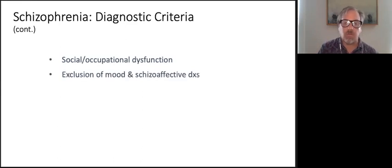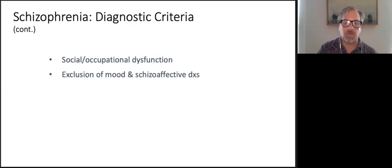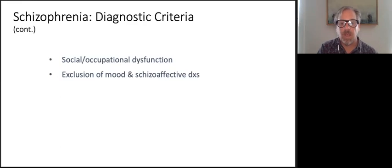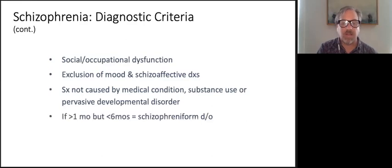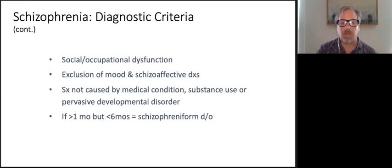For a diagnosis of schizophrenia, you've got to exclude bipolar disorder, major depression with psychotic symptoms, and schizoaffective disorder — which is sometimes a more challenging differential to make. We also have to be confident this is not being caused by acute intoxication or medical conditions. If it's less than one month, it's a brief psychotic disorder. One month to six months is schizophreniform disorder. After six months, we need to decide if this is developing into schizophrenia.